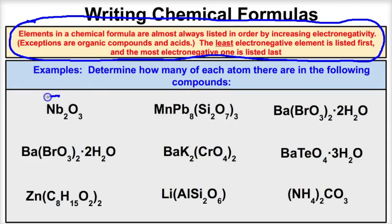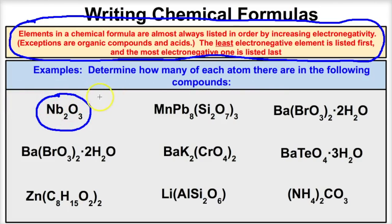For example, in Nb2O3, Nb is going to be less electronegative than oxygen, so it gets listed first. There are going to be two Nb's and three oxygens that make up this compound Nb2O3.